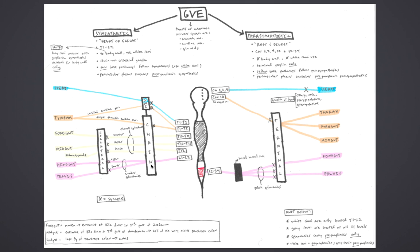Sympathetics serve the body wall and use white rami; parasympathetics do neither. Postganglionic sympathetic cell bodies are in chain or collateral ganglia, whereas postganglionic parasympathetic cell bodies are located in terminal ganglia. The perivascular plexus contains postganglionic sympathetics and preganglionic parasympathetics. GVA fibers associated with pain use sympathetic pathways to reach the CNS, whereas sensory pathways associated with reflexes use parasympathetic pathways to reach the CNS.